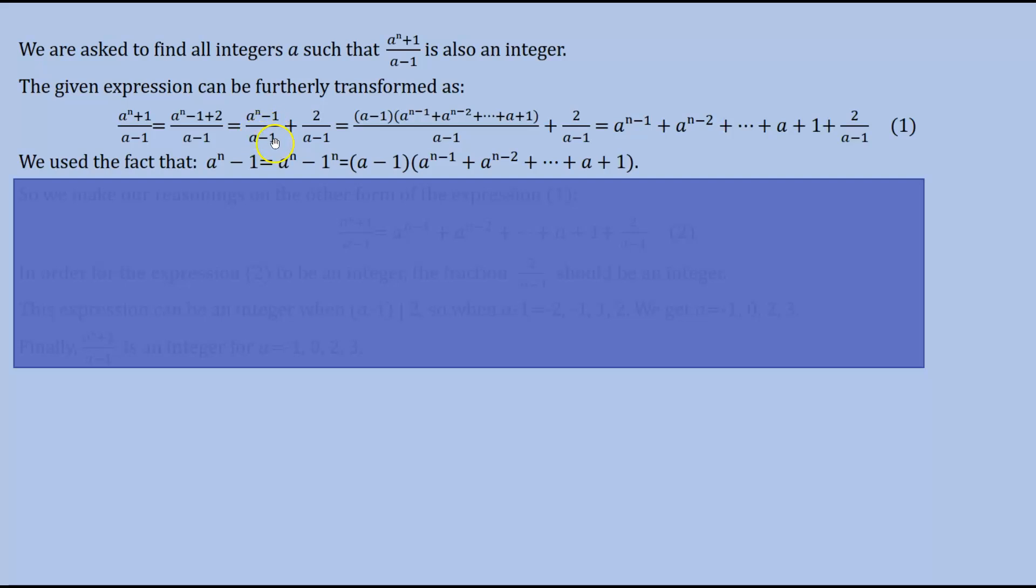This first fraction can be factorized by (a-1) which multiplies (a^(n-1) + a^(n-2) + ... + a + 1), divided by (a-1), plus 2/(a-1).